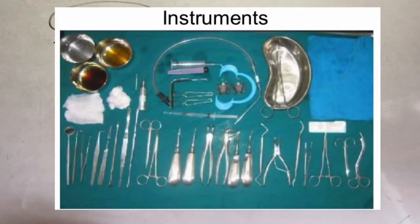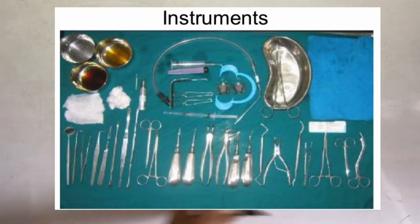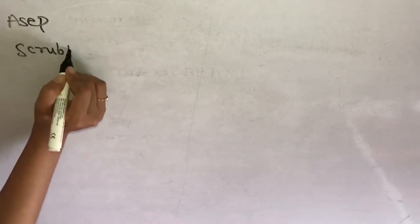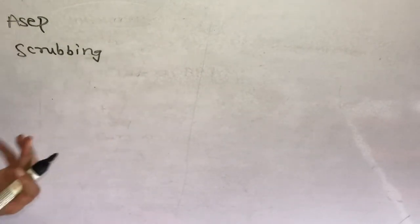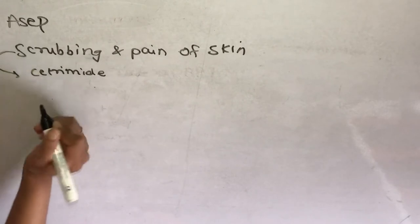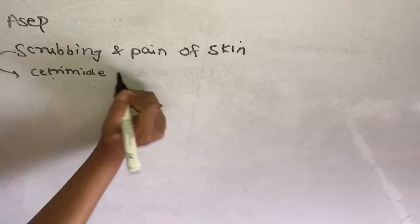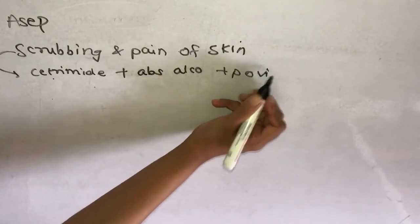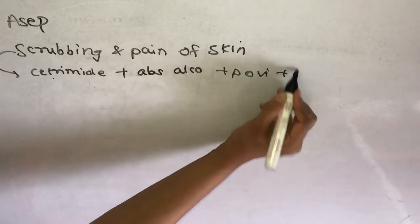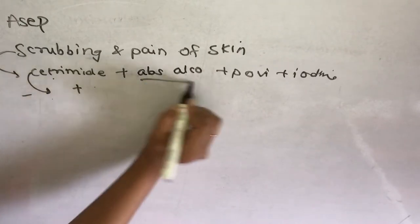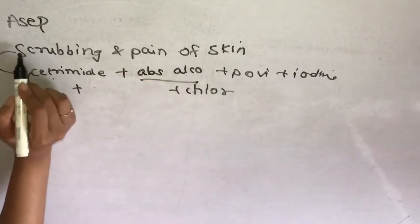Starting with the first step — asepsis and isolation — which involves scrubbing and painting to prepare both the patient and yourself for the procedure. For scrubbing and painting of the skin and oral mucosa, you use: cetrimide plus absolute alcohol plus povidone-iodine, or cetrimide plus absolute alcohol plus chlorhexidine.